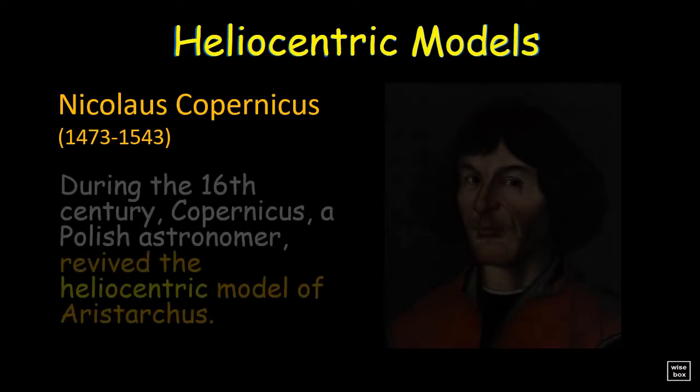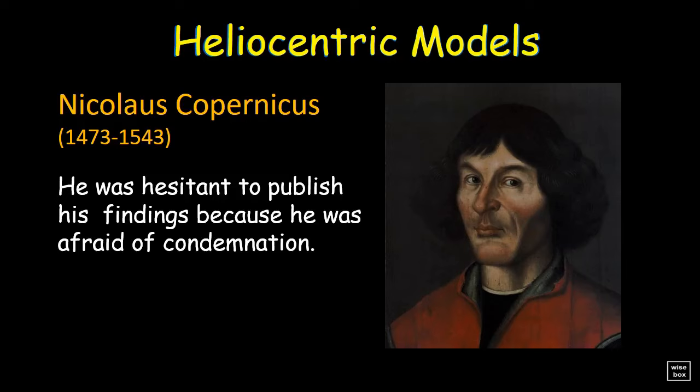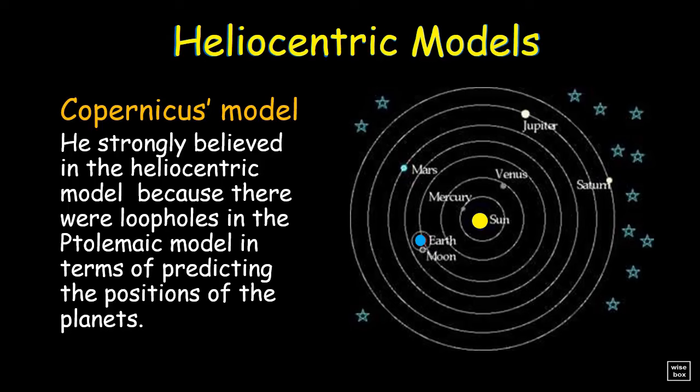Nicolaus Copernicus. During the 16th century, Copernicus, a Polish astronomer, revived the heliocentric model of Aristarchus. He was actually hesitant to publish his findings because he was afraid of condemnation by religious leaders, but it was still published a year before his death. Copernicus strongly believed in the heliocentric model because there were loopholes in the Ptolemaic model in terms of predicting the positions of the planets.